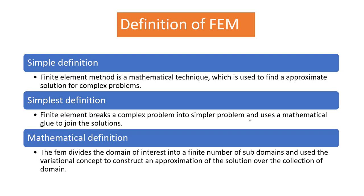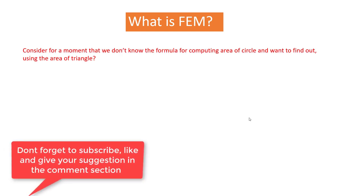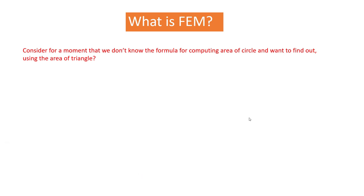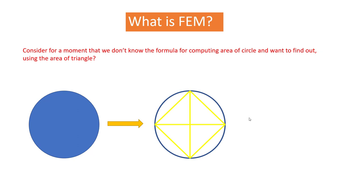At this point, these definitions may seem complicated if you are hearing about FEM for the first time. To absorb the concept, let's take a simple example. Consider that we don't know the formula for computing the area of a circle, and we only know how to compute the area of a triangle. So let's take a circle — since we only know the area of a triangle, we can partition this circle into different triangles.